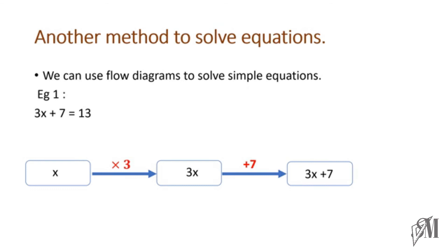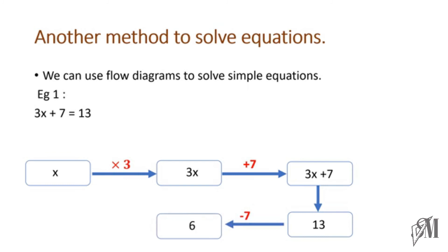We know this expression equals 13, so we put 13 in the next box. Now we go in the reverse direction, where every operation must be its opposite. Above we added 7, so going back we subtract 7: 13 minus 7 equals 6. Above we multiplied by 3, so going back we divide by 3: 6 divided by 3 equals 2. Therefore x equals 2. Verification: 3 into 2 is 6; 6 plus 7 equals 13 — answer is correct.